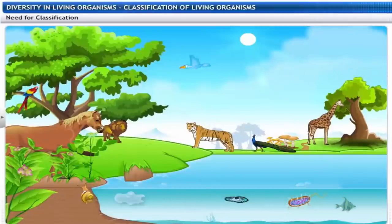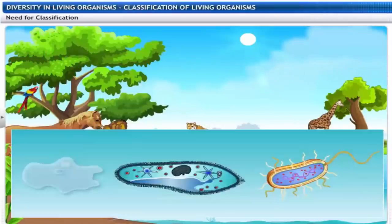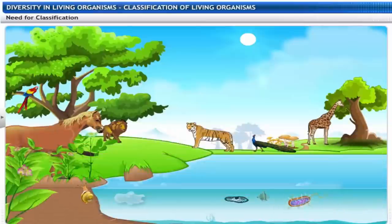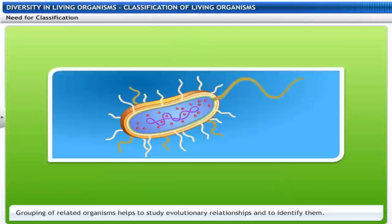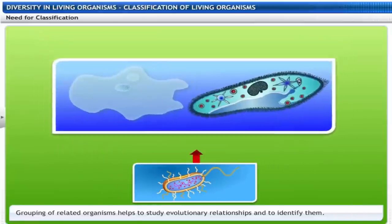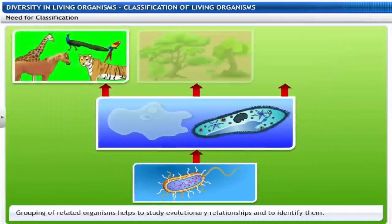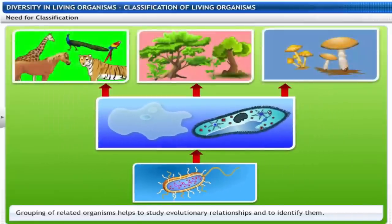Organisms differ in form, structure and mode of living. So they need to be grouped according to their similarities. The grouping of related organisms helps to study evolutionary relationships and to identify them.